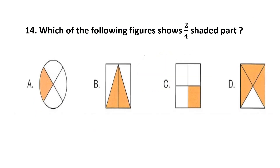Question number 14. Which of the following figures shows 2 by 4 shaded part? The answer is option B, because this figure has 4 equal parts — 1, 2, 3 and 4 — and out of which 2 parts are shaded. That means this is 2 by 4 shaded. Answer is option B.